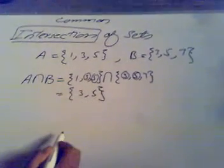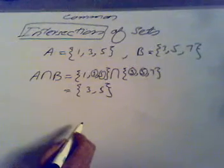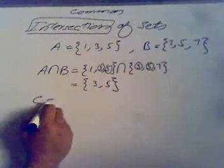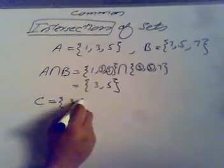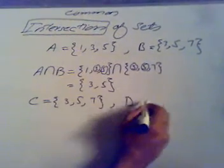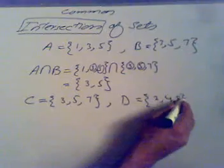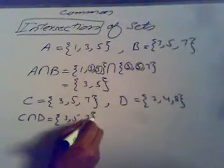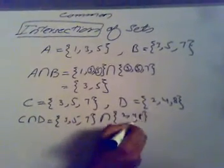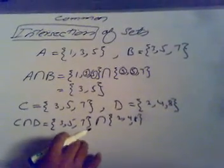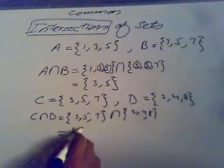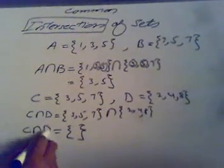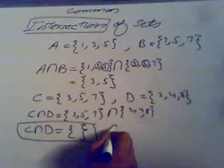The intersection means the common elements, so we write only those. Encircling the common elements: 3 is common, and 5 is common. So A intersection B equals {3, 5}. When there is no common element, we say the two sets are disjoint. For example, C equal to {3, 5, 7} and D equal to {2, 4, 8} — C intersection D is the empty set because there are no common elements, so C and D are called disjoint sets.